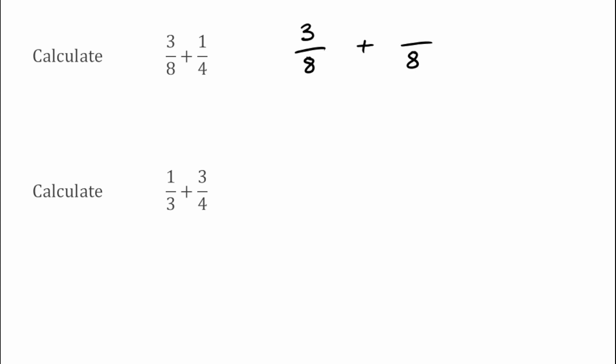Now we want to change this 1 quarter. Because we've changed it to an 8, we've multiplied the bottom by 2, but to keep this fraction equivalent I've also got to do that to the top. So because I've times the bottom by 2 I've got to times the top also by 2. If we do 1 times 2 we get 2, so 1 over 4 is equal to 2 over 8.